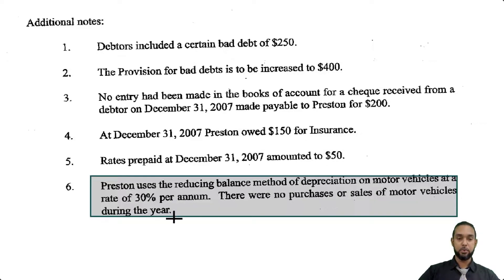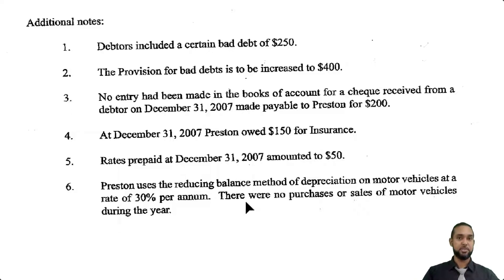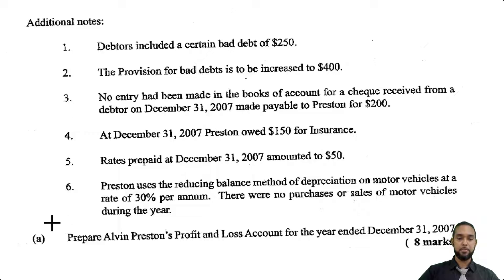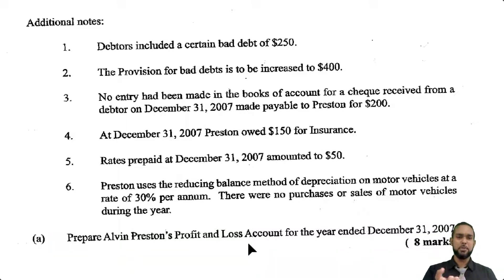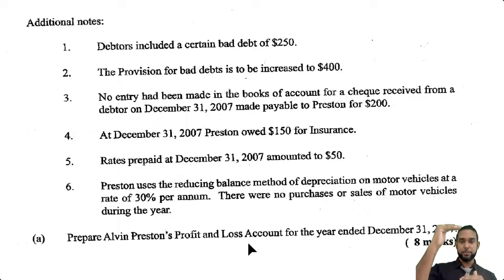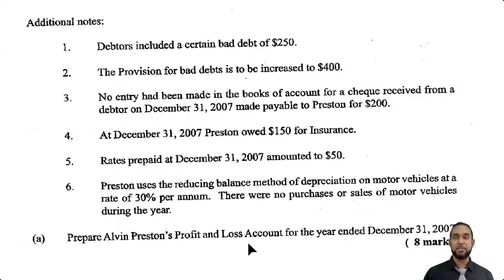Finally, item six: Preston uses the reducing balance method of depreciation on motor vehicles at a rate of 30% per annum. There were no purchases or sales of motor vehicles during the year. That's going to give us the information as to how to calculate the provision for depreciation for the current year. They want us to prepare Alvin Preston's profit and loss account for the year ended December 31st, 2007. Prior to around 2011-2012, they referred to the income statement as the trading and profit and loss account — the trading account covered sales to gross profit, and the profit and loss aspect covered gross profit down to net profit.